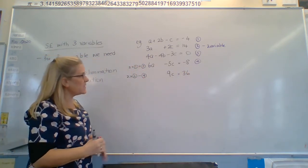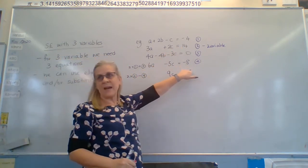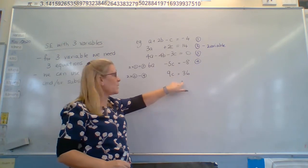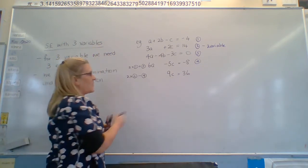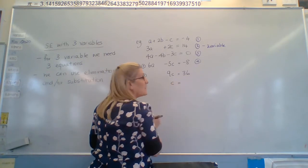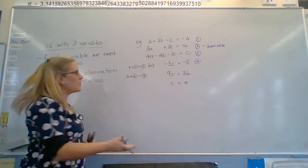All right. This is when the minus minuses. So it's fourteen take away negative eight. All right. Be careful with those ones. So now I've got nine c equals thirty-six. I can find out that c is four. All right. One down.